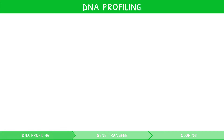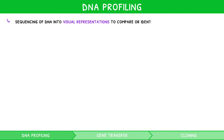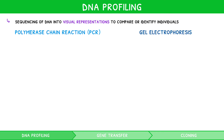DNA profiling is the sequencing of DNA into visual representations to compare or identify individuals for a variety of purposes. This process requires two main sub-techniques: the polymerase chain reaction, PCR, and gel electrophoresis. Let's quickly look at them.